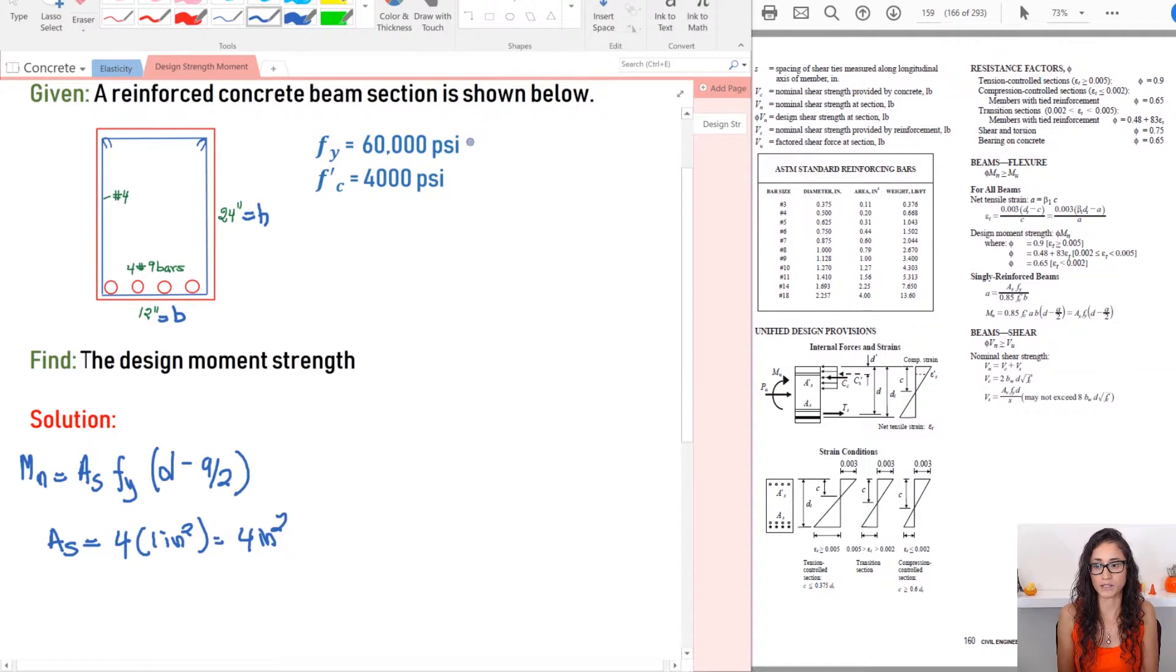FY is given to us, it's 60,000 PSI. So for D in my test, I was given D, but I just want to make sure here I go over it. So just you guys understand what really D is. So to calculate the depth, it really goes from the top of your beam and then all the way down to the center of the bar.